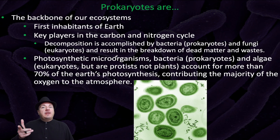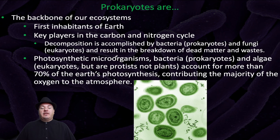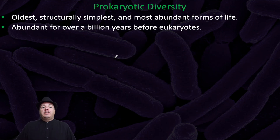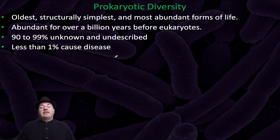Additionally, when you think about photosynthesis, most people think about plants, but photosynthetic microorganisms — bacteria called cyanobacteria, and algae, which are eukaryotic protists, not plants — account for more than 70 percent of the Earth's photosynthesis, contributing to the majority of oxygen in the atmosphere. So most of the oxygen in the air you're breathing isn't coming from plants; it's coming from microorganisms. Prokaryotes are very diverse — the oldest, structurally simplest, and most abundant forms of life, abundant for over a billion years before eukaryotes evolved. 90 to 99 percent of prokaryotes are unknown and undescribed, and less than one percent actually cause diseases.